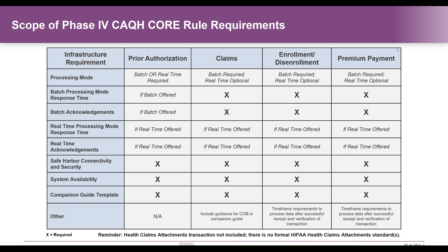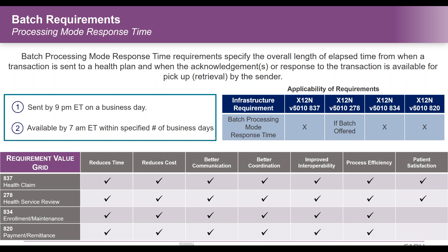Looking at the processing mode batch requirements, you can see that the requirements are specific for the 837, the 834, and the 820. Only for the prior authorization or the 278, if the entity offers the batch transaction, may you only offer this transaction real-time — the batch requirements wouldn't be applicable.